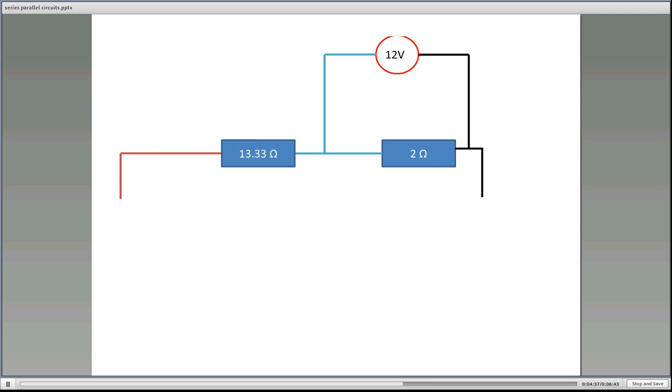Now that we know that, we knew we had a 12 volt drop across the 2 ohm resistor. What is the voltage drop across that resistor there? Well, we know we had 6 amps flowing through the circuit. So just using Ohm's Law, V equals I times R. We have 6, and that's the 6 amps, multiplied by the 13.33 ohms. That gives you 79.98 volts.